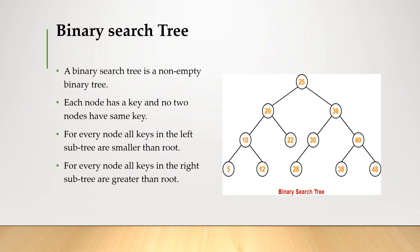Binary search tree: a non-empty binary tree is known as a binary search tree. Each node has a key and no two nodes should have the same key. In a binary search tree, all keys in the left subtree should be smaller than root, and all keys in the right subtree should be greater than root. Here is the example: 25 is the root node. All the keys in the left subtree — 20, 10, 22, 5, 12 — are smaller than 25, so these are inserted at the left side.